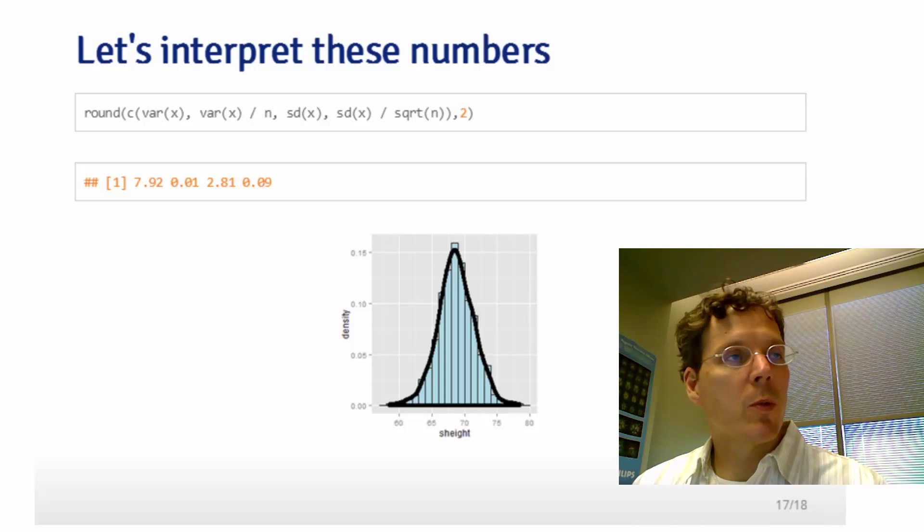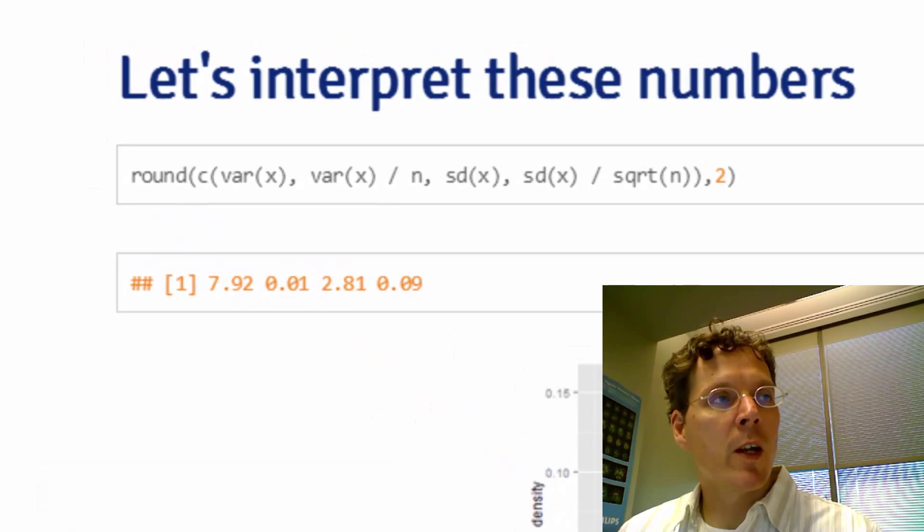Let's just go through a couple of the numbers we can calculate here. So here I took variance of x, variance of x divided by n, standard deviation of x, standard deviation of x divided by square root n, and I rounded all the numbers to two decimal places.